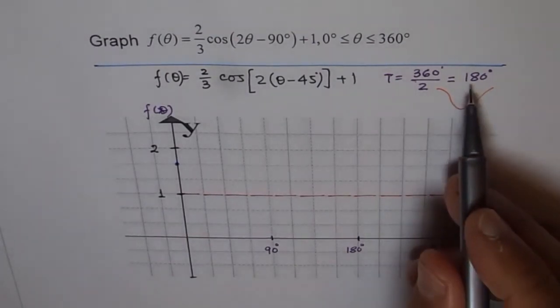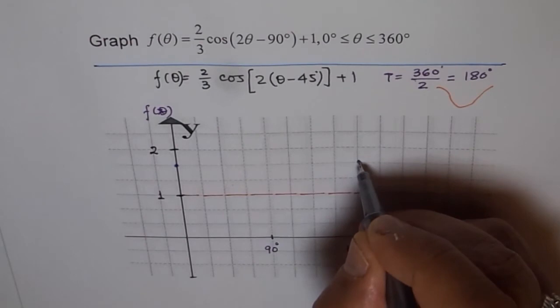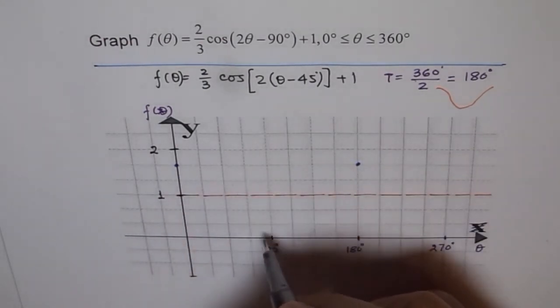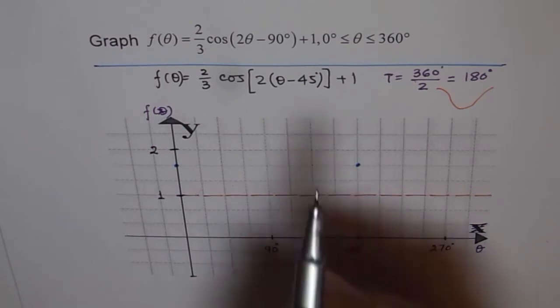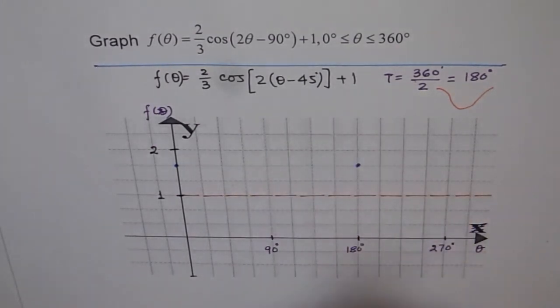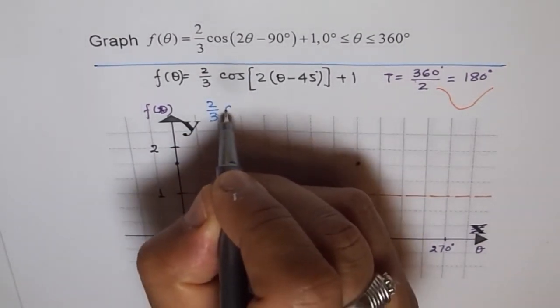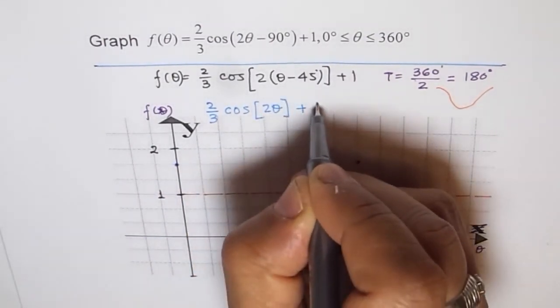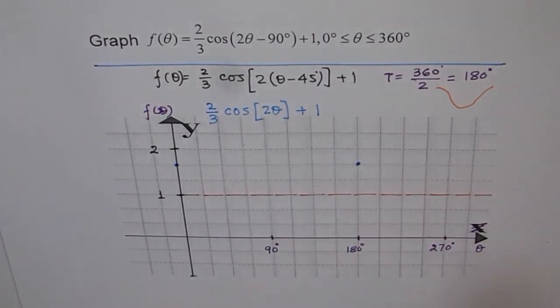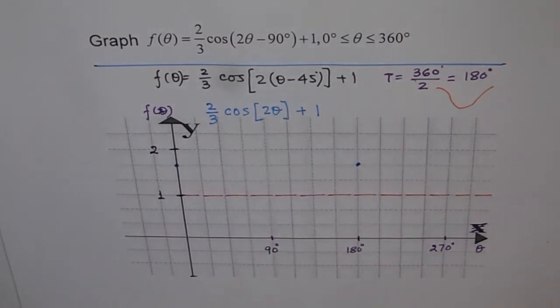We know our time period is 180 degrees, so it is going to end at 180 degrees. Somewhere it will come like this and right in the center we will have minimum. At present I'm drawing 2 over 3 cos of 2 theta plus 1. Let's be very clear about it. With this blue ink I'm drawing this graph. Later I will incorporate the phase shift.